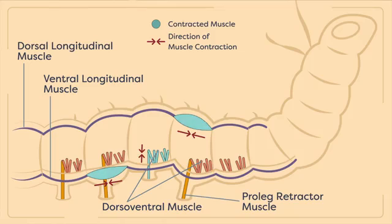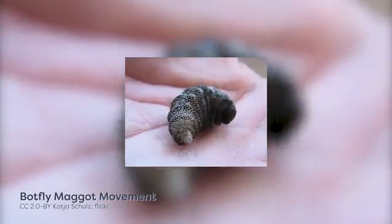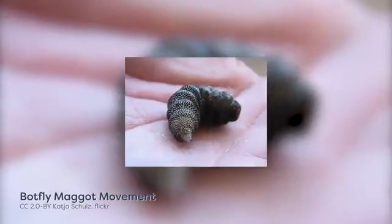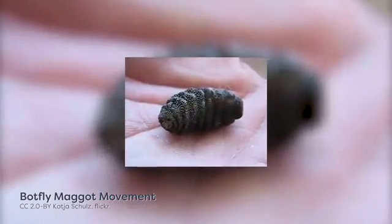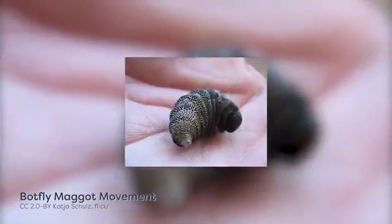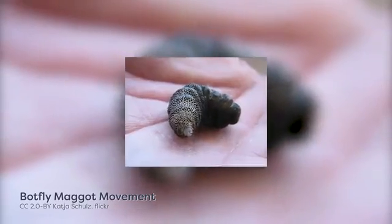When muscles contract in one part of the body, it causes an extension in another relaxed part of the body. As the muscles continue to contract and relax in sequential waves, this creates either an undulating or sinusoidal snake-like motion of the larva.